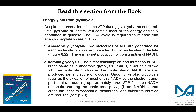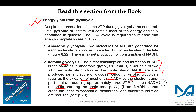Regarding energy yield from glycolysis: two molecules of NADH are produced. Under ongoing aerobic glycolysis, oxidation of this NADH by the electron transport chain produces 3 ATP for each NADH molecule entering the chain. Please read this section on aerobic glycolysis in your textbook at least twice and make notes, as this information is essential for later calculations.